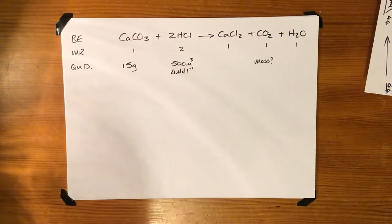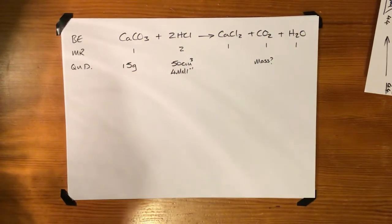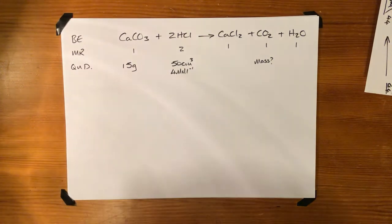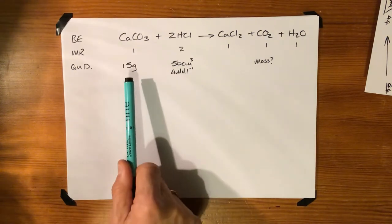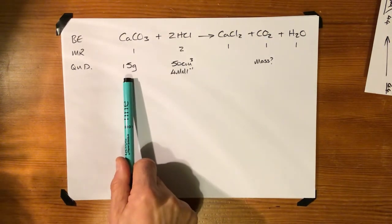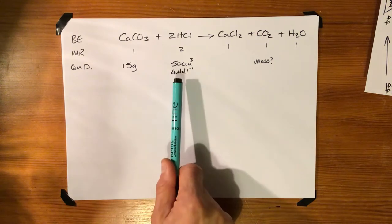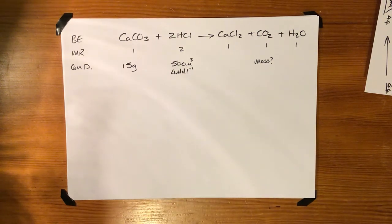Right, here's another one. Calcium carbonate reacting with hydrochloric acid to give us calcium chloride and carbon dioxide and water. So we've got our balance equation, we've got our mole ratio, and it basically tells us this time that 15 grams of calcium carbonate reacts with 50 centimeter cubed of four molar HCl.